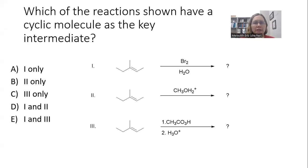This question asks which of the reactions shown have a cyclic molecule as the key intermediate. All right, so we have three different reactions, so that kind of ups the complexity a little bit of the question, and we have to think about what reagents we have and what types of intermediates will they be forming.